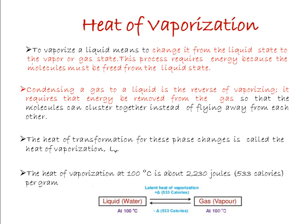Taking the example of water, the heat of vaporization of water at 100°C is about 2230 joules or 533 calories per gram. When you add 533 calories of heat to liquid water, it gets converted into vapor or gaseous form. When you remove this heat from the gas, it gets converted back into liquid water. This is known as the heat of vaporization.